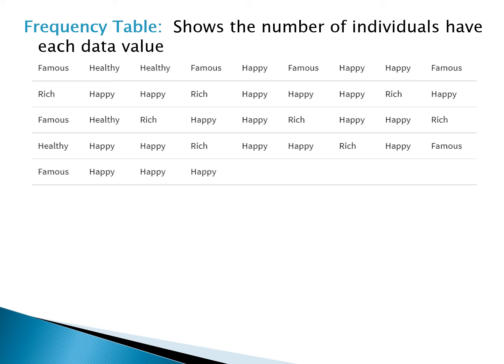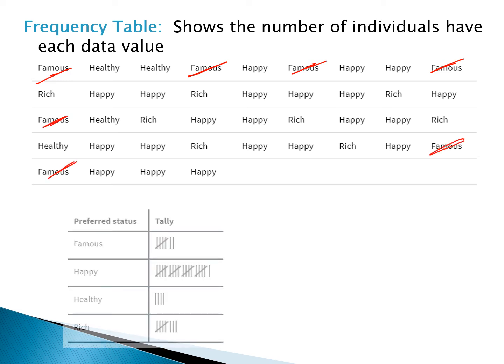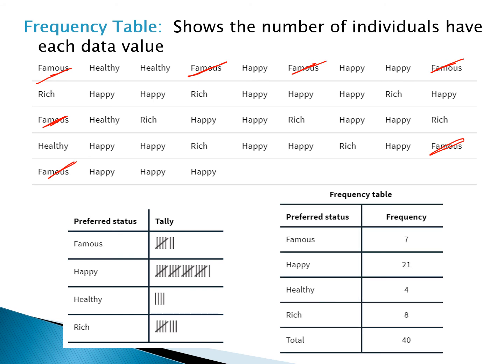When we talk about frequency in statistics, we're talking about a count. A frequency table shows the number of individuals in each data value. For famous, for example, we go through and tally up how many people chose famous: one, two, three, four, five, six, seven — we make tally marks for each of the four categories. A frequency table shows us that at a glance. We can see right away that most students chose to be happy, the fewest chose to be healthy, and at the bottom we have a total that adds all those numbers up.